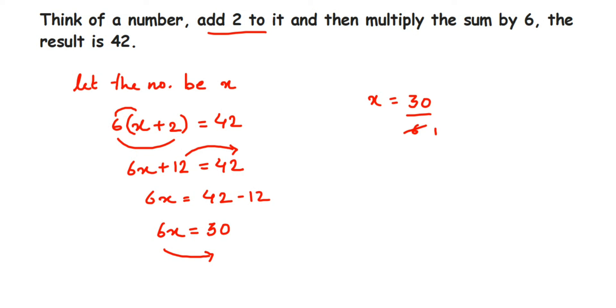So 30 divided by 6. Cancel them - 6 ones are 6, 6 fives are 30. So x is equal to 5. So x is equal to 5 means the number which we have assumed is 5.